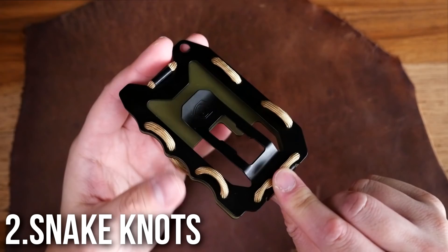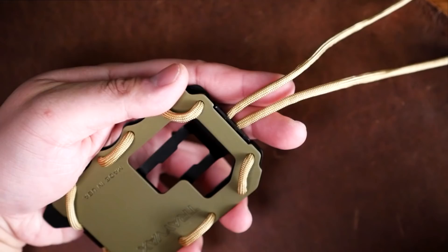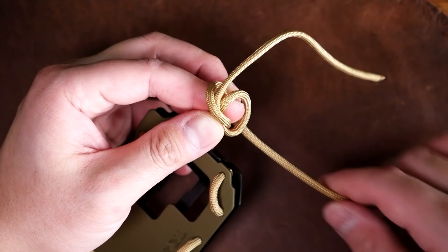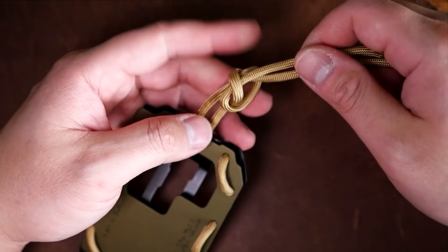Next up Snake Knots. So I've already re-laced up the wallet with some gold paracord. I think that looks nice as well for this color combo. And now we're going to start tying some Snake Knots. I've got my two strands sitting like so. Now take the top strand and wrap it around my index finger. Take the opposite strand and wrap it around as well. And then put it through the loop you created the first time.